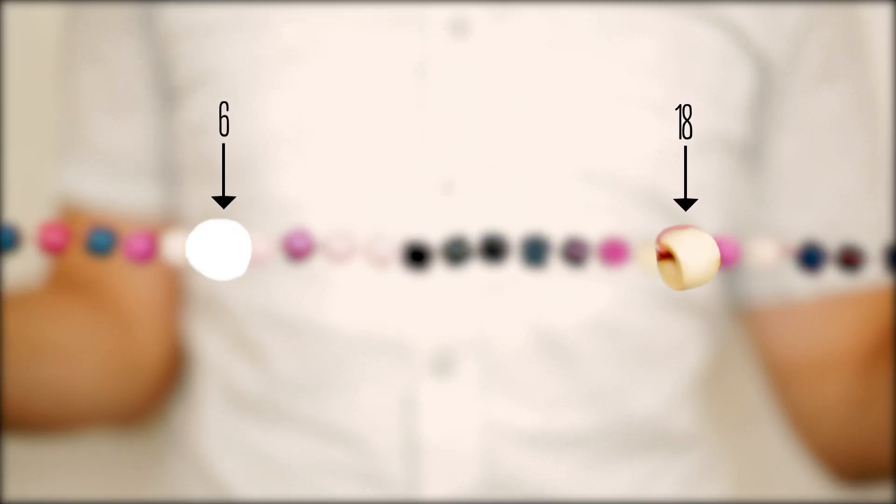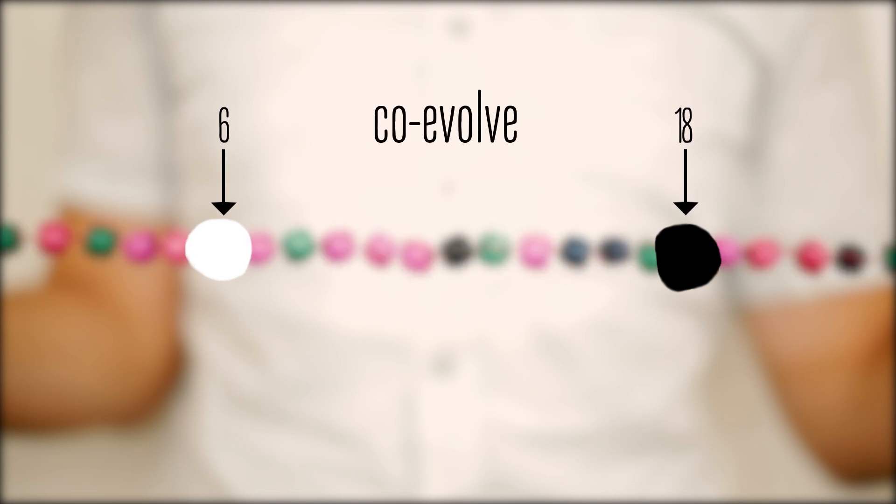If that's true, then a mutation in the DNA that changes one of the amino acids must be accompanied by another mutation to the other member of the pair to preserve the interaction. In essence, they co-evolve.